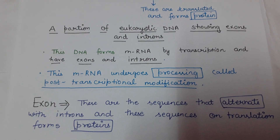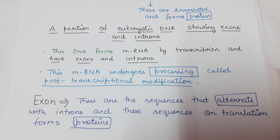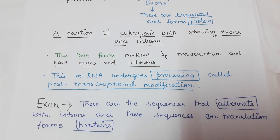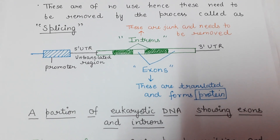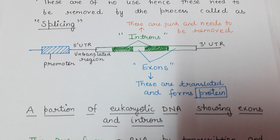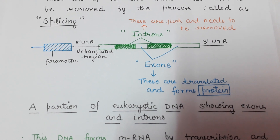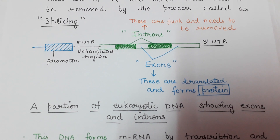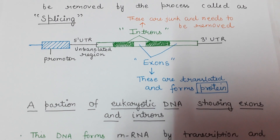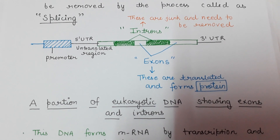Exons are the portions present in eukaryotic DNA that undergo translation and form proteins. That is the main difference between exons and introns: exons are the portions of eukaryotic DNA that translate and form protein, whereas introns do not play any role in protein formation. Introns are regarded as junk DNA and are removed by splicing, which occurs after the formation of mRNA.